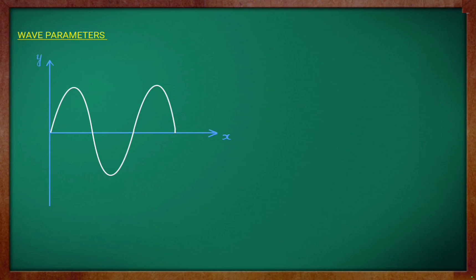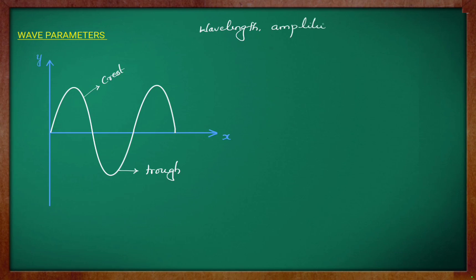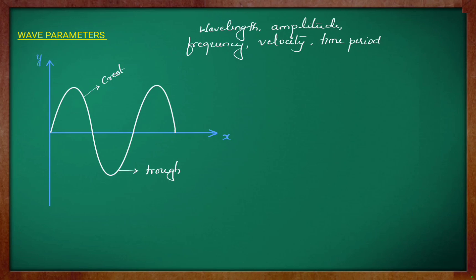Here I have considered a wave. The upper part in the positive y direction is the crest of a wave and the lower part is known as the trough. There are different parameters that define a wave and these parameters are wavelength, amplitude, frequency, velocity, time period, and wave number. Now let us see what these parameters are one by one.